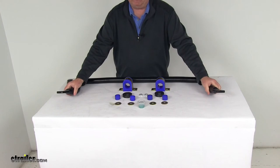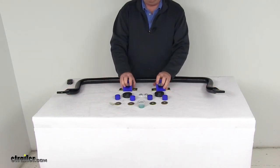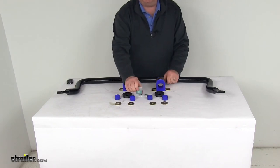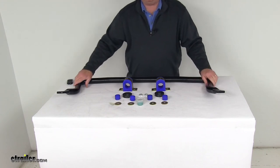Now this part does include everything shown here on the table. The bar itself, all the mounting hardware you need, the polyurethane bushings, even includes a nice little tub of the bushing lubricant that you want to apply to all your bushings when you install it. And these parts are made in the USA.